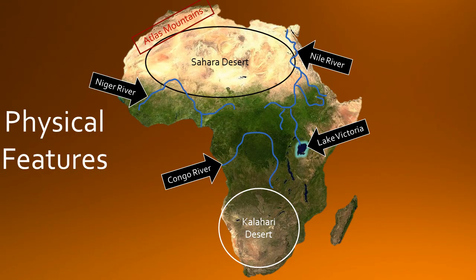This is Lake Victoria. It is located in eastern Africa. The countries that border it are Uganda, Tanzania, and Kenya. It is the largest lake in Africa and the largest freshwater lake in the world.